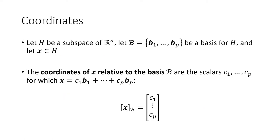So the basis tells us there is one and only one way to write a vector in the subspace as a linear combination of the basis vectors. The name we have for that one way is coordinates. The scalars in that linear combination — c1, c2, c3, and so on up through cp — when we put those into a vector, we call it the coordinates of the vector x relative to the basis B. The notation is x in brackets with a subscript for the name of the basis. We'll often use a script B, but b stands for basis, so that's the typical notation.